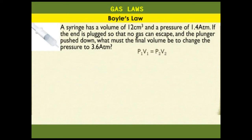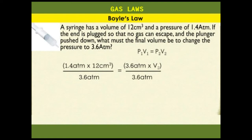P1V1 equals P2V2. 1.4 atmospheres times 12 cm³ equals 3.6 atmospheres times V2. To get V2, we divide both sides by 3.6 atmospheres. 3.6 atmospheres cancel out and atmospheres cancel out here. We remain with 1.4 times 12 cm³ over 3.6 equals V2. That gives us 4.666 cm³ equals V2, which also means V2 equals 4.666 cm³.